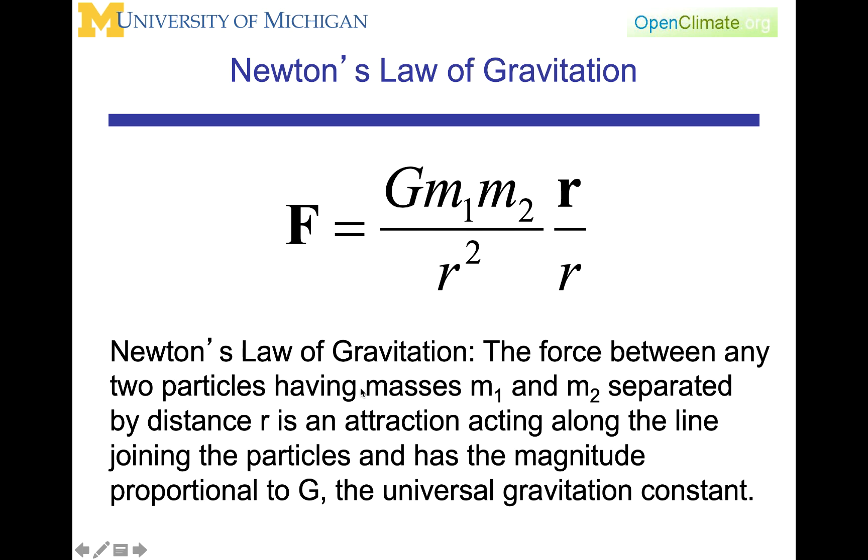To be precise, the force between any two particles having mass m1 and m2 separated by distance r is an attraction acting along the line joining the particles and has the magnitude proportional to G, the universal gravitation constant. So this is the universal gravitation constant, and here is the representation of the line joining the particles. And the strength of that force is, again, going to be inversely related to the square of the radius.